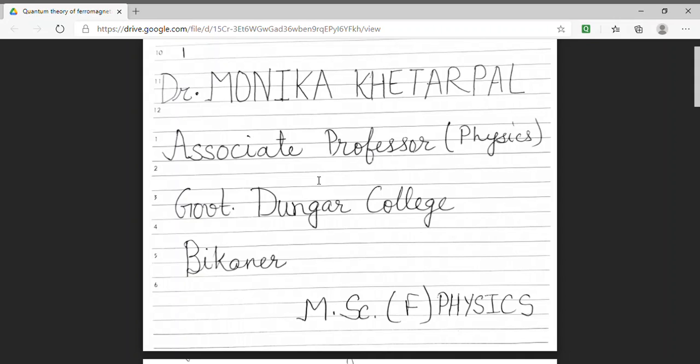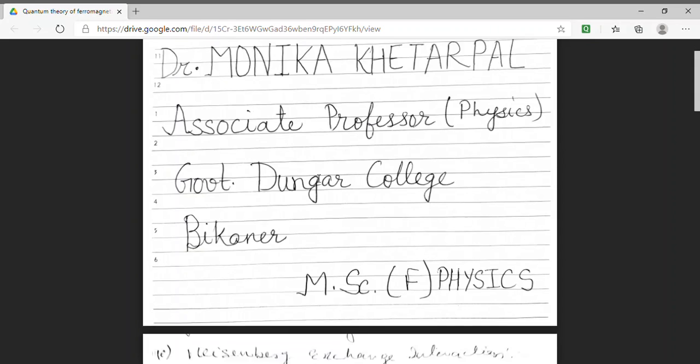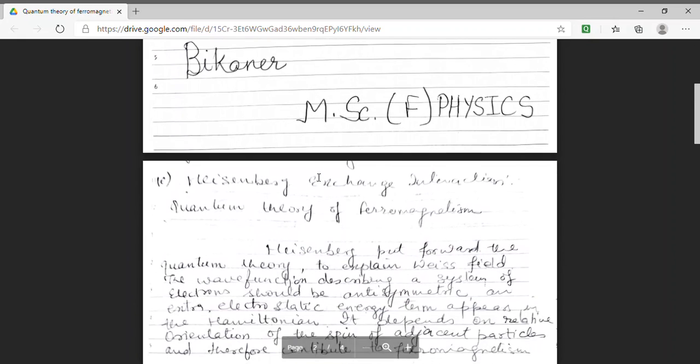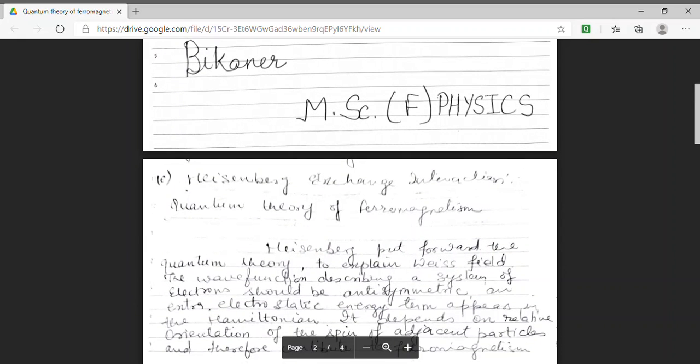We were dealing with ferromagnetism. Students, we know that in a material ferromagnetic property arises when temperature is less than a critical temperature which is known as Curie temperature. And we have also shown by graphical method that this ferromagnetism arises because of spin motion and orbital motion has no contribution in it.